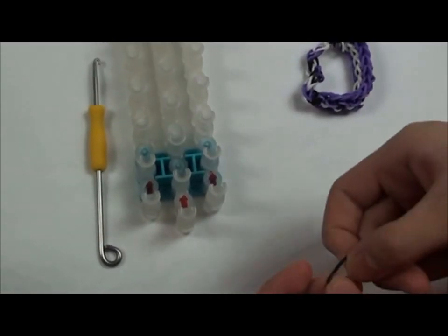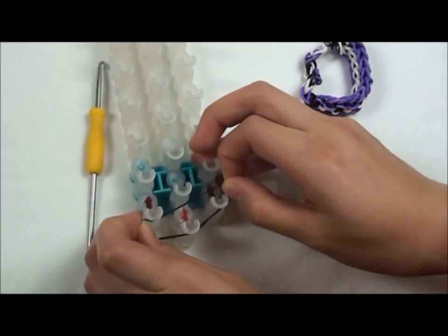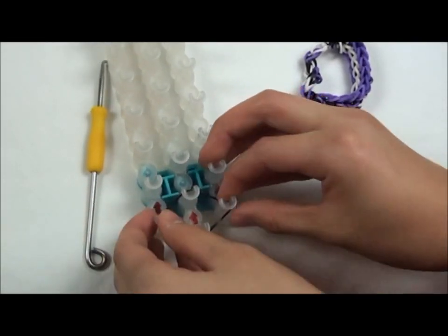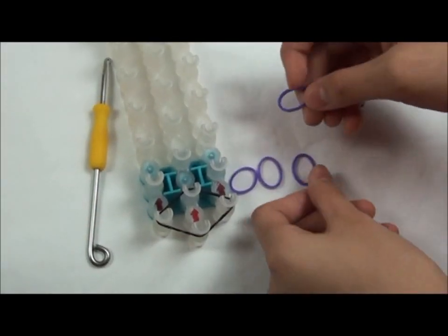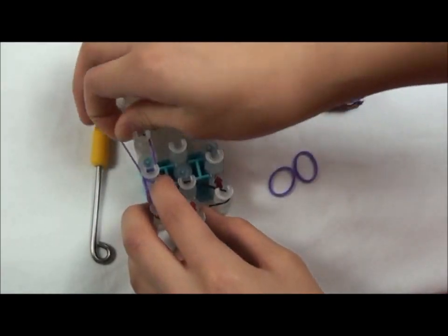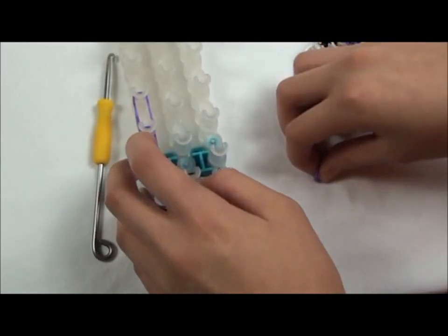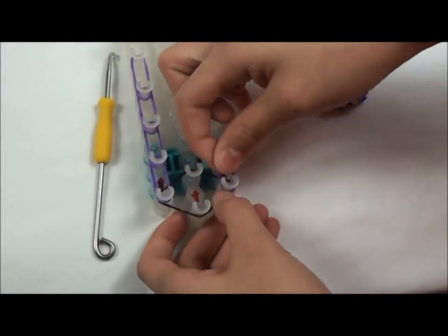The first step is to lay the rubber bands. Take a rubber band and form it into a diamond on the template. Next, take other rubber bands and put them up to the side and make them go up. Do the same with the other side.